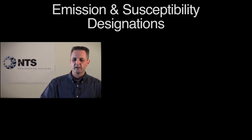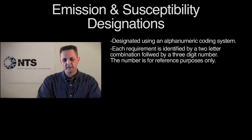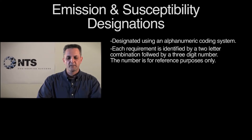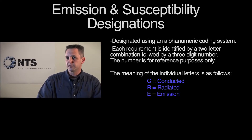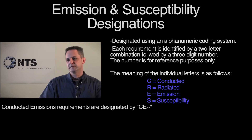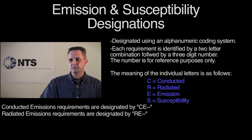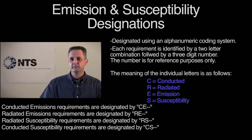In MIL-Standard 461, these individual test methods for emissions and immunity, and radiated and conducted tests, are designated using a two-letter combination followed by a three-digit number. A 'C' stands for a conducted test, an 'R' stands for a radiated test, an 'E' stands for an emissions test, and an 'S' stands for a susceptibility test. So, for example, conducted emissions would be designated as CE, radiated emissions as RE, radiated susceptibility as RS, and conducted susceptibility as CS.